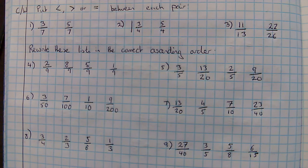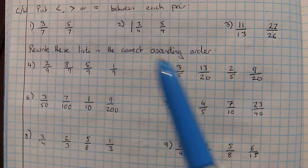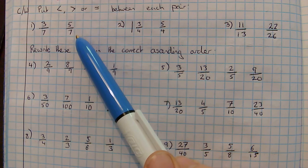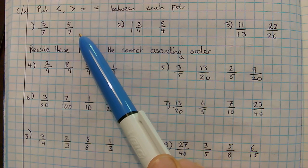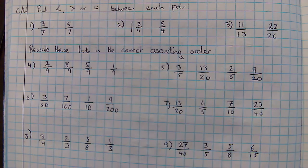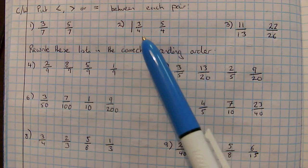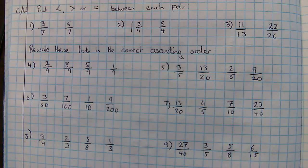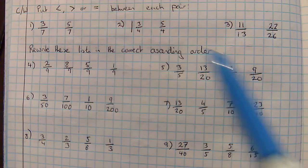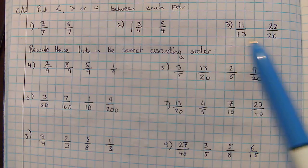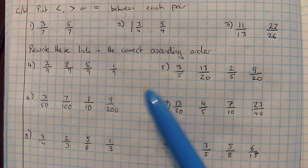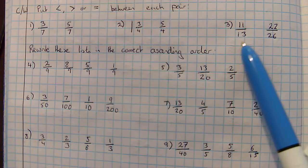So these are the nine questions that I'd like you to try. For the first ones, you've got the same denominator, so it's just a matter of comparing the numerator. For number two, you've got a mixed number and an improper fraction, so you're going to need to convert that into an improper fraction. And then from here onwards, you're going to need to find a common denominator.